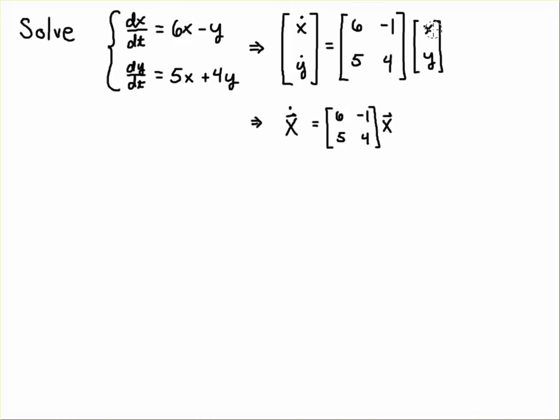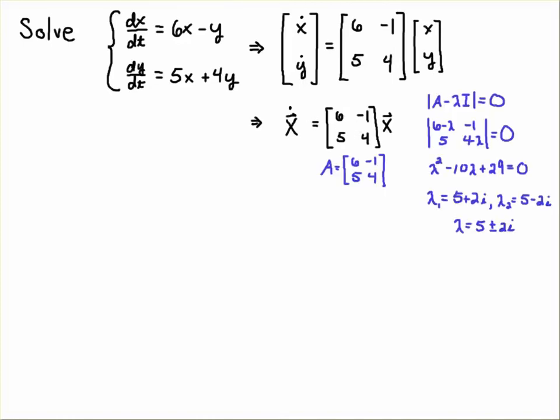And then in this case the vector capital X dot is the vector x dot, y dot, and the capital X is the vector x, y. So sometimes you'll see the matrix system written this way or matrix equation written that way.